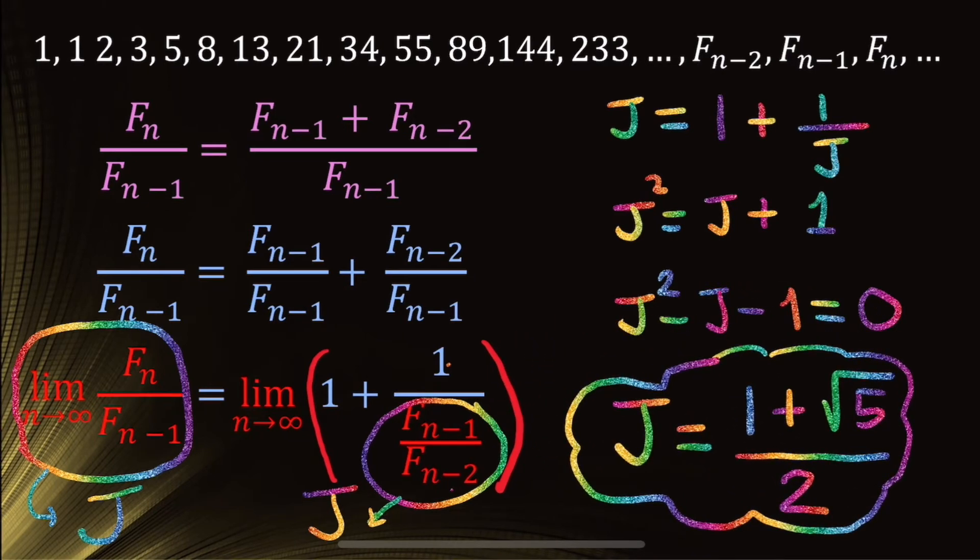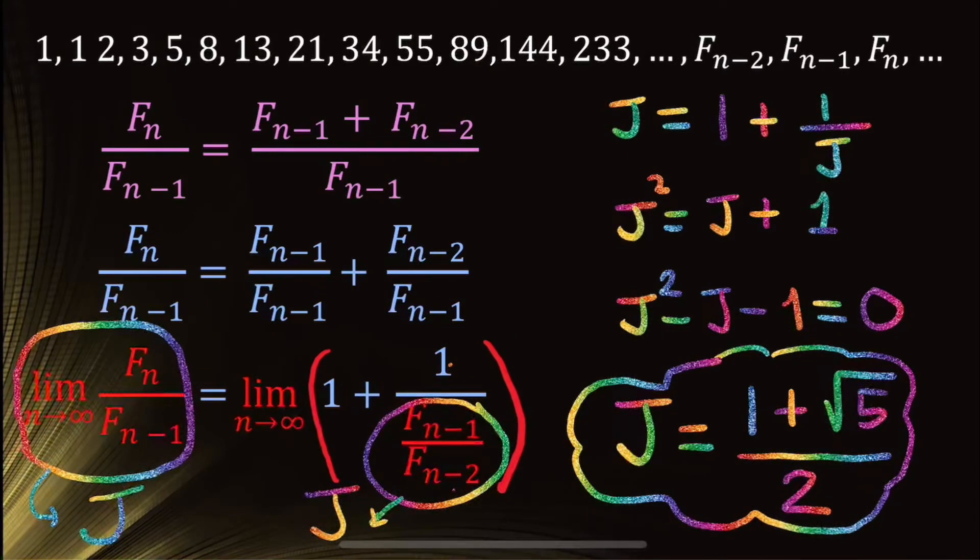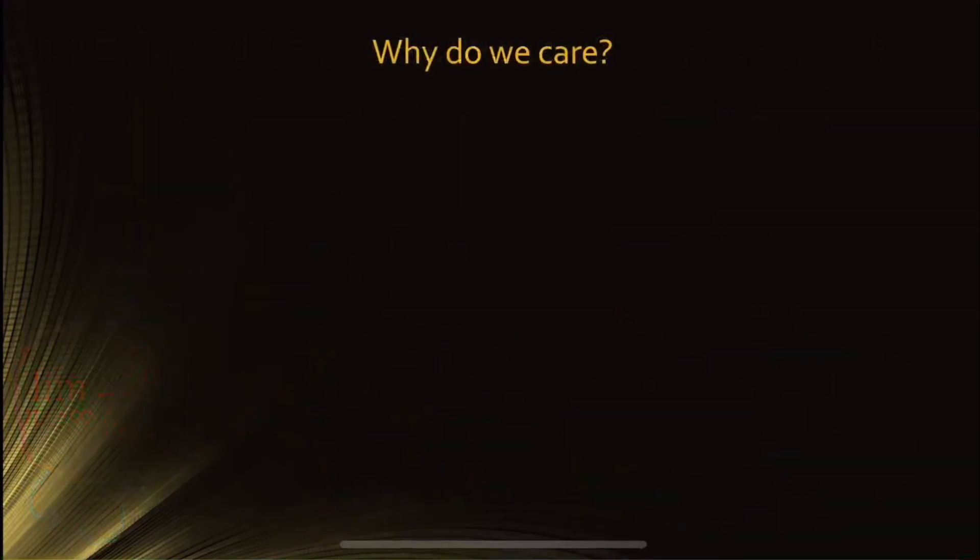Once again, we only care about the positive value since we're talking about the ratio between the numbers in the sequence. And you're probably asking the question, why do we even care about the golden ratio and the Fibonacci sequence? Is it even useful to us? And where can we even see it in real life?